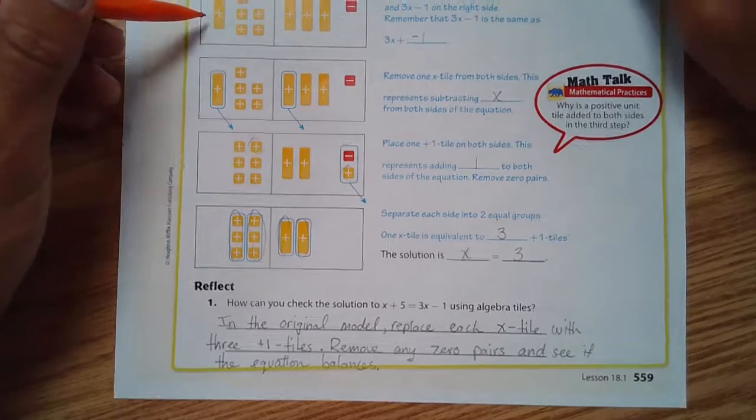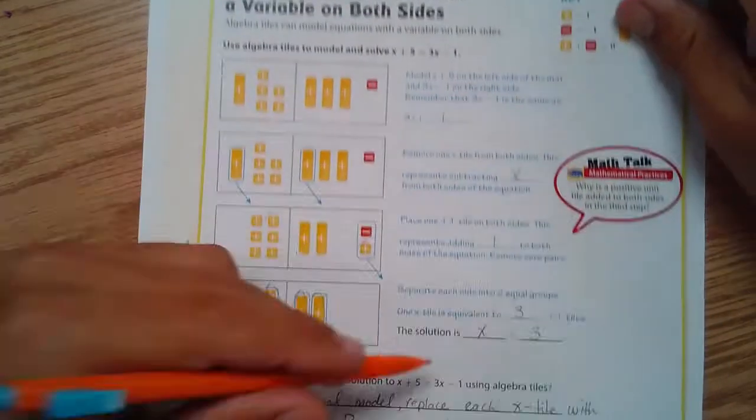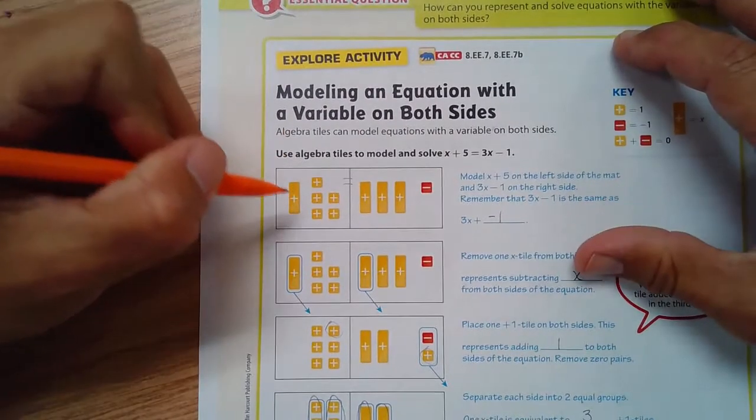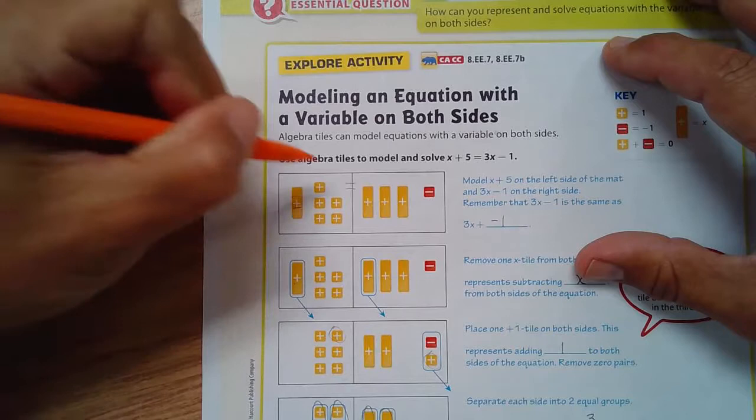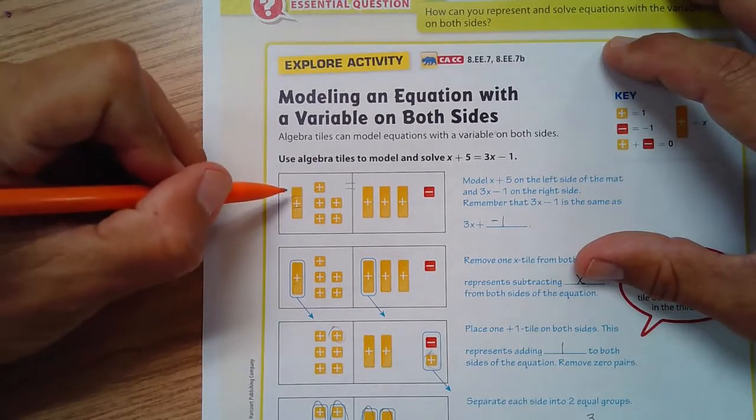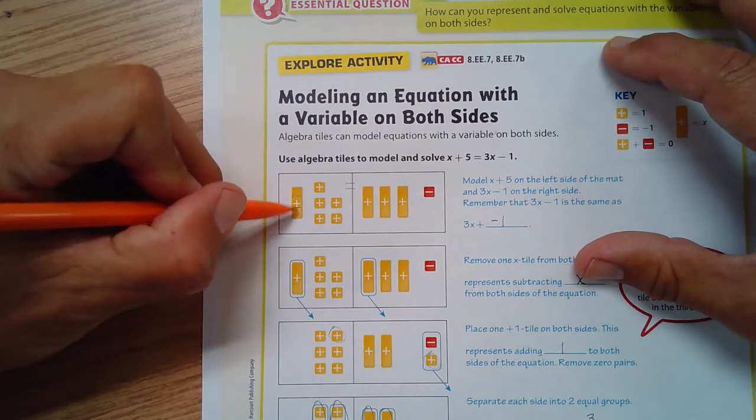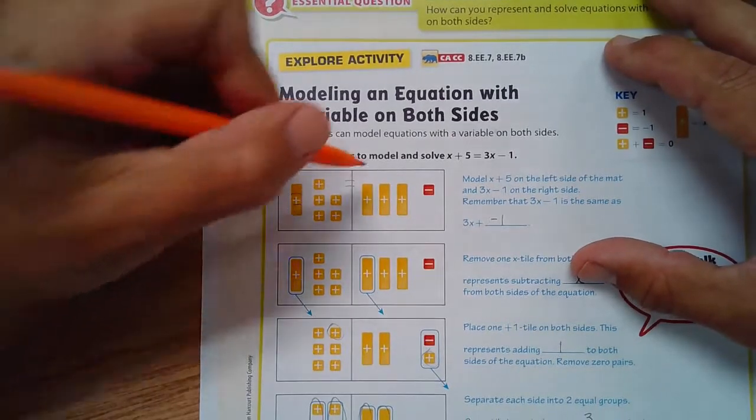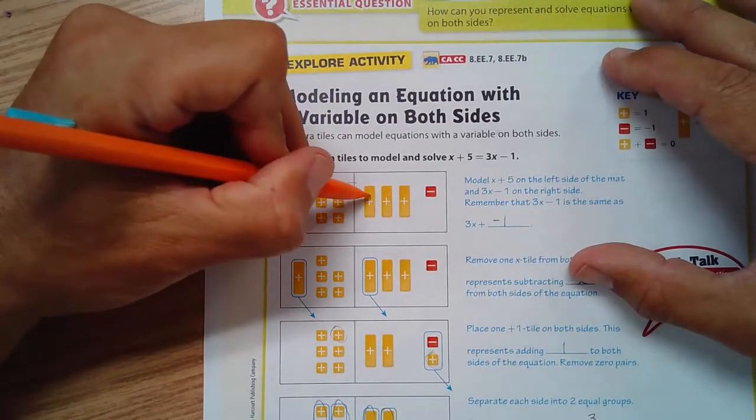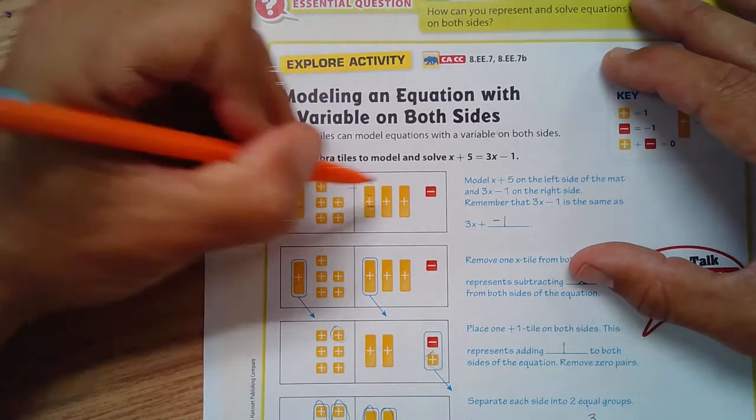If we go to the original equation here, if x is 3, I'm going to divide this into three equal parts. So one x is equal to 1, 2, 3. Now if I split each of these and say each x represents 3...